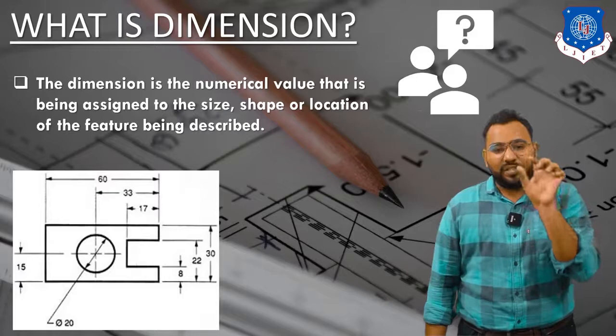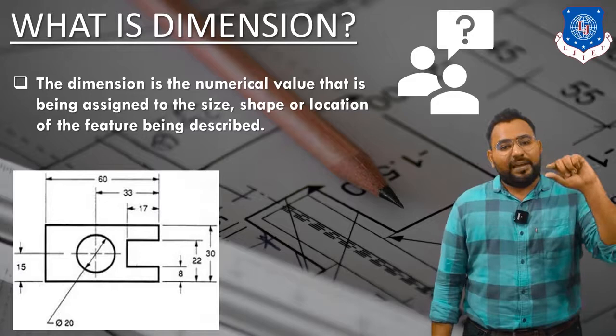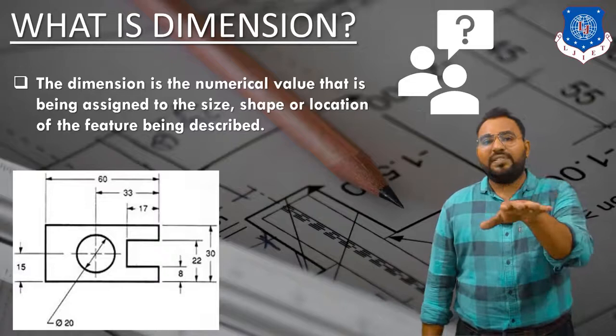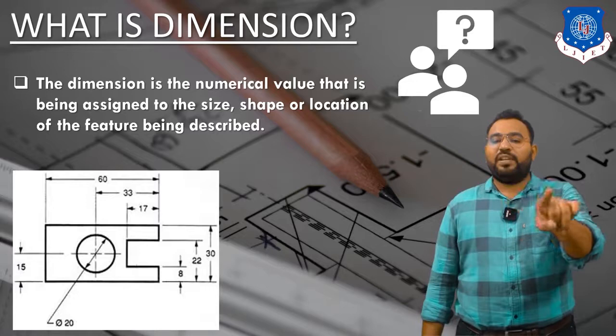So it shows that this object contains a circle and the diameter of that circle is shown by the dimension line with Ø20 written on it. That means this circle has a diameter of 20 mm. First, we can confirm that all dimensions are numerical values.